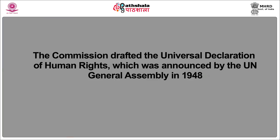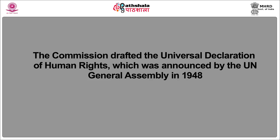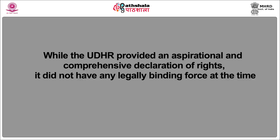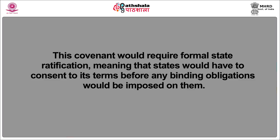This led to the creation of the UN Commission on Human Rights, i.e. the CHR, in 1946. The Commission drafted the Universal Declaration of Human Rights, which was announced by the UN General Assembly in 1948. While the UDHR provided an aspirational and comprehensive declaration of rights, it did not have any legally binding force at the time. The CHR was therefore tasked with drafting a covenant that would elaborate on the rights in the UDHR and give them legal authority. This covenant would require formal state ratification, meaning that states would have to consent to its terms before any binding obligations would be imposed on them.